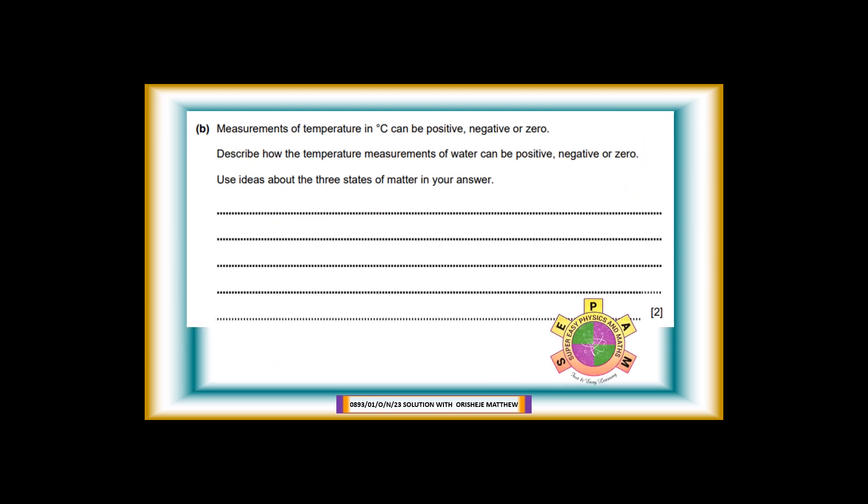Question 3b. Measurements of temperature in degree C can be positive, negative, or zero. Describe how the temperature measurements of water can be positive, negative, or zero. Use ideas about the three states of matter in your answer. For 2 marks. Answer: The temperature is negative when water is a solid, ice. The temperature is zero degree C when solid water, ice, is melting. The temperature is positive when water is a liquid. The temperature is positive when water is a gas, steam.